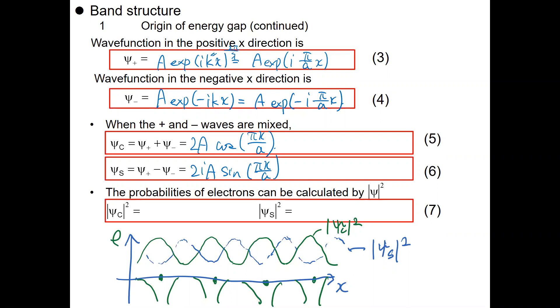One of the important features of the wave function is, if you take the square of the wave function, that indicates the probability of the electrons, meaning that psi squared is proportional to the electron density. Just take the square of each wave function, and you can obtain, ignoring the constant part, cosine squared pi x over a and the other side is sine squared pi x over a.